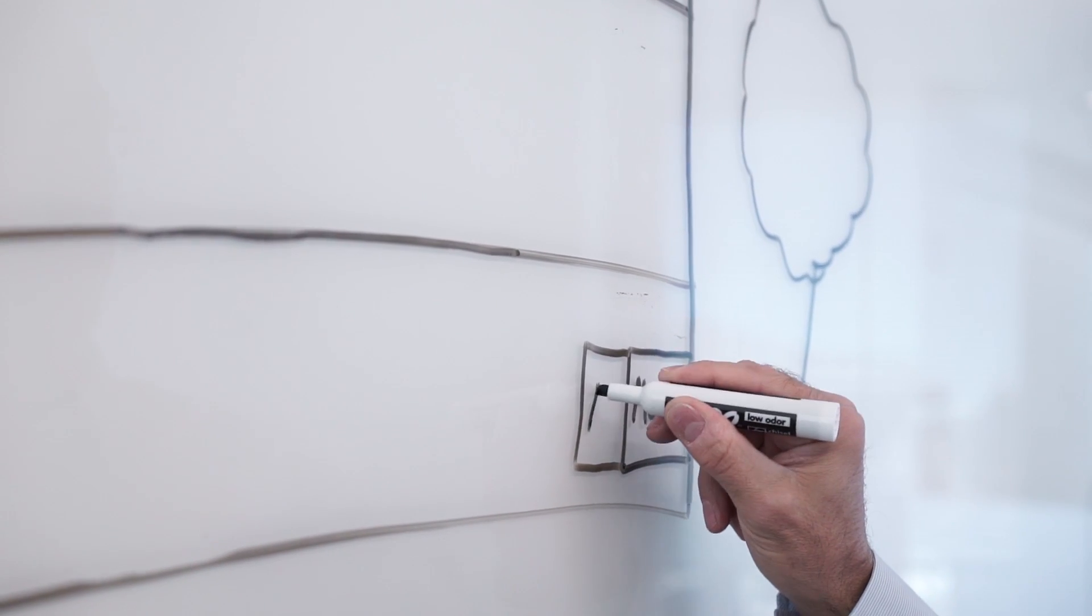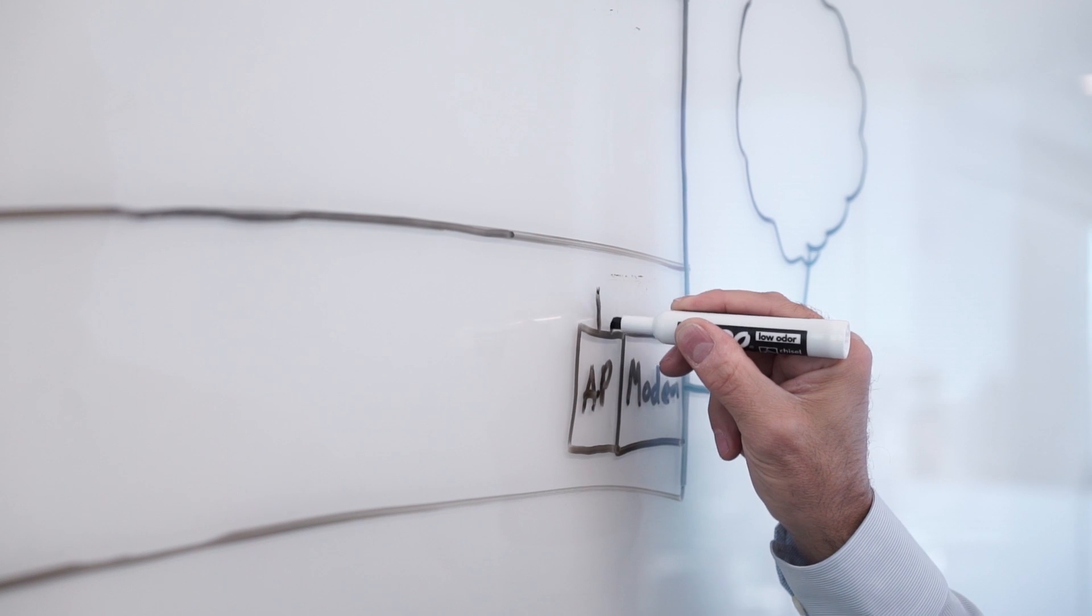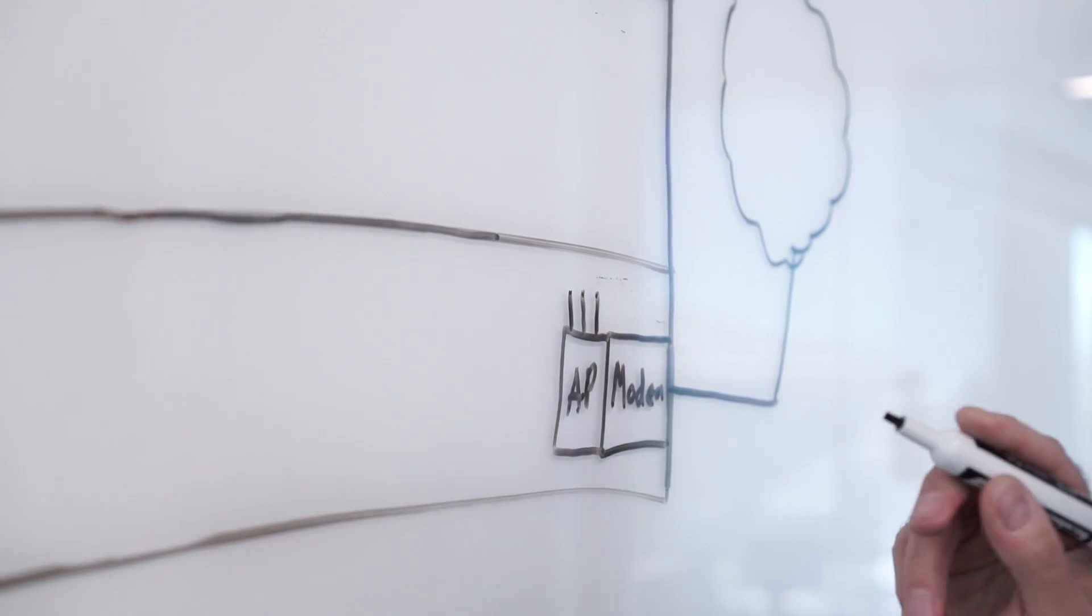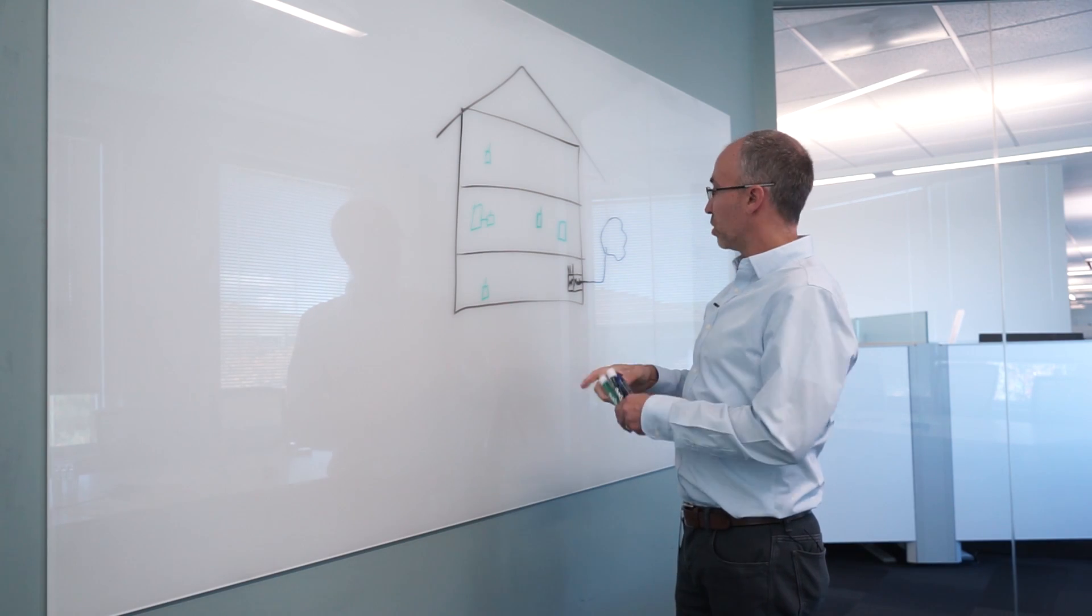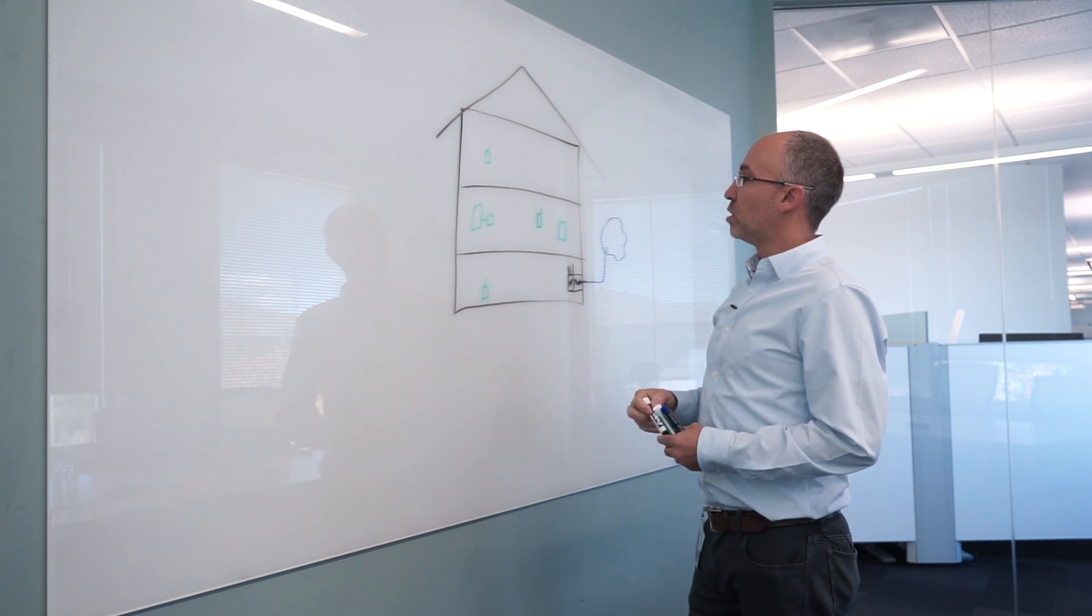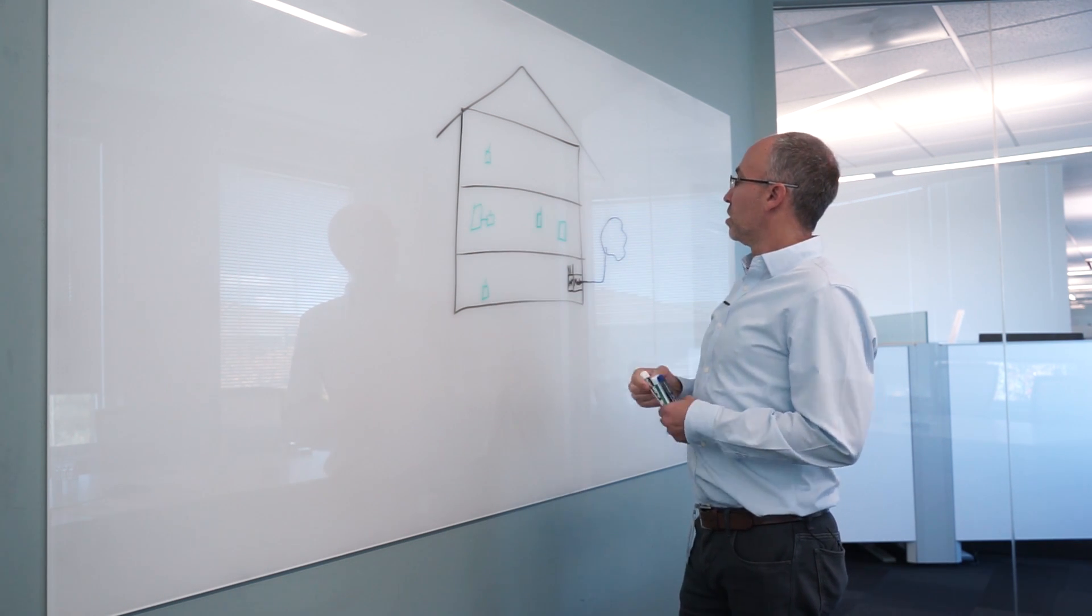The cable modem probably has an access point built into it and that would cover probably 75% of this home. The problem we're seeing is that a lot of these homes can't be covered by this one access point.